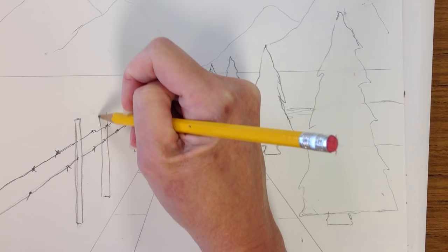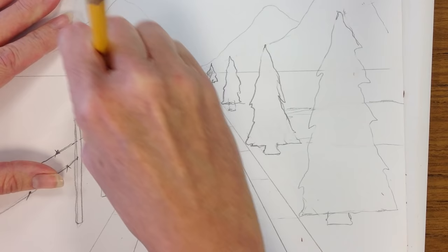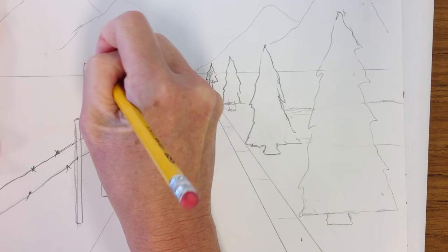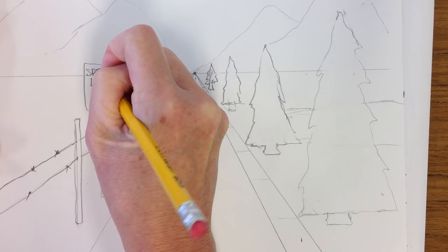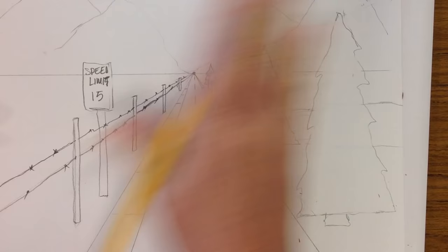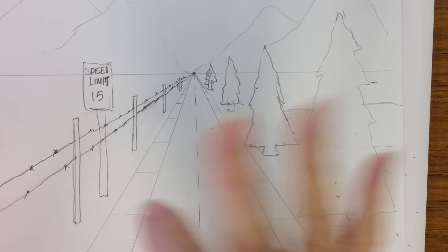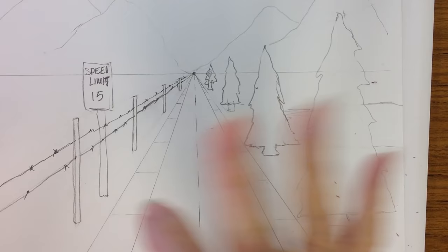I could always add in maybe another sign that says, you know, like speed limit or something like that. And remember to draw light until you get everything how you want it, all the details in. There's lots of details that you can add.